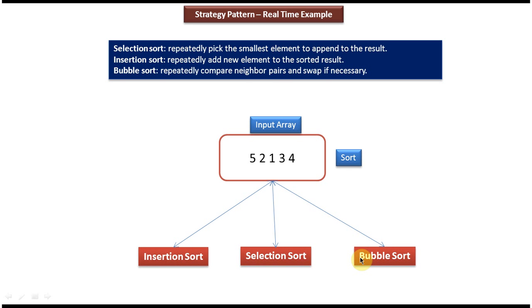So here to perform sort, there are multiple options. From that I have to choose one algorithm to perform the sorting. So this is a best example of strategy design pattern.